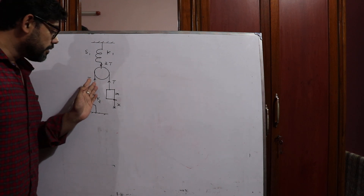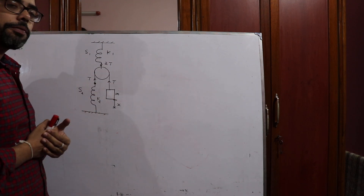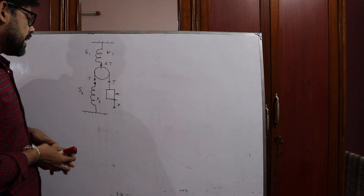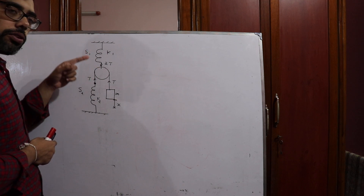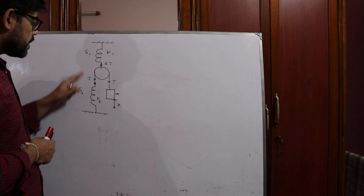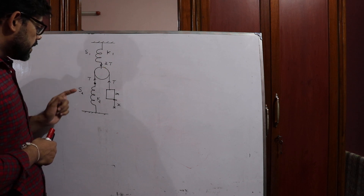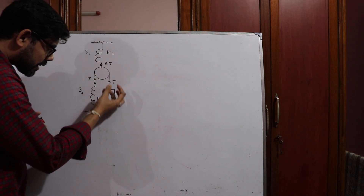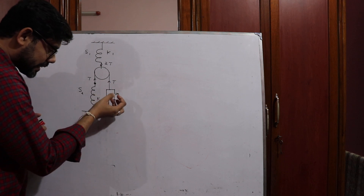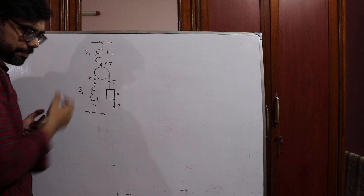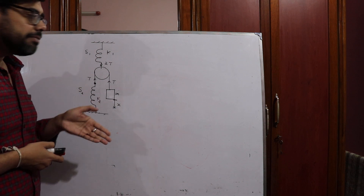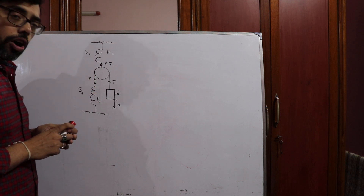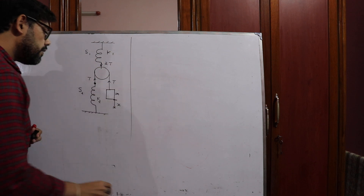We will be working out this particular problem. You have a light massless small pulley connected by two springs S1 and S2. S1 has spring constant k1 and S2 has spring constant k2. If you pull this block slightly down by a small distance x and release it, it executes SHM. We want to find the time period of oscillation of this block — it's a very important problem of simple harmonic motion.